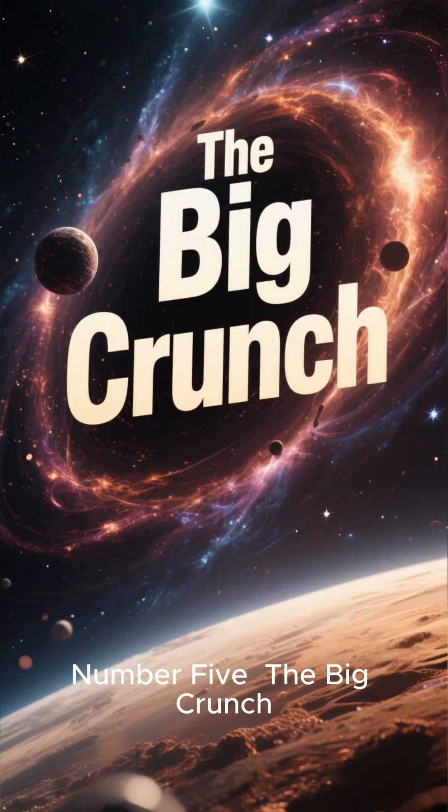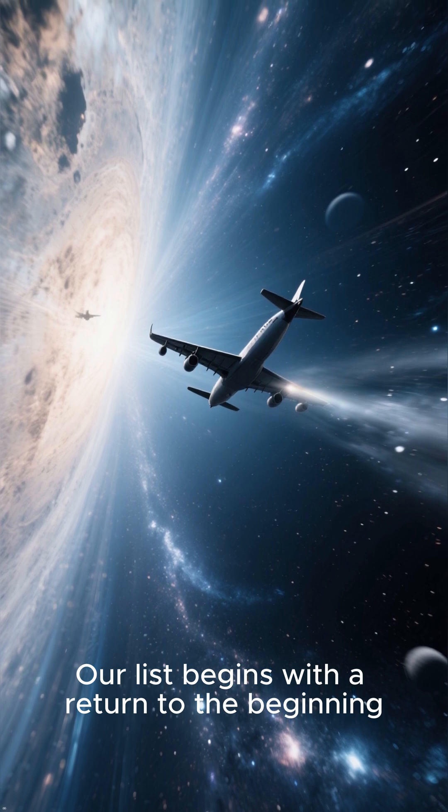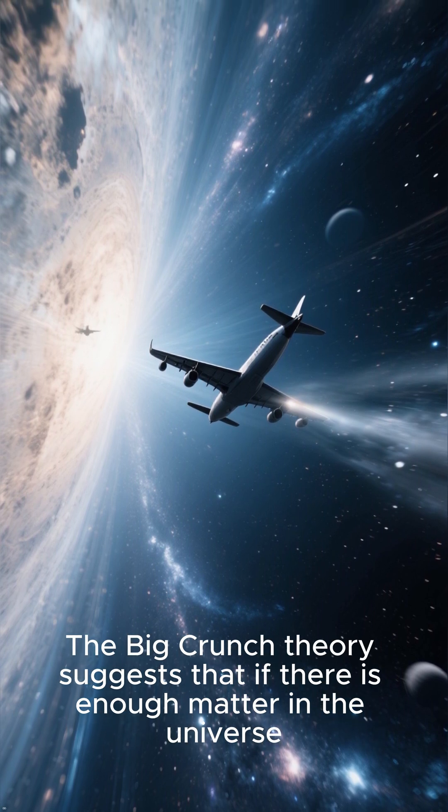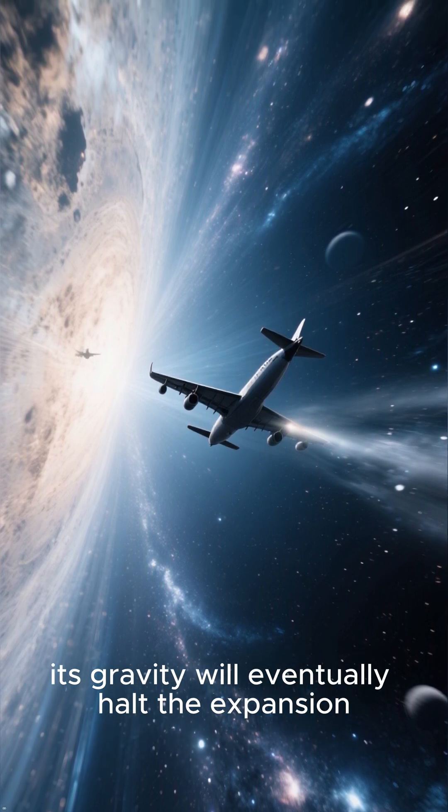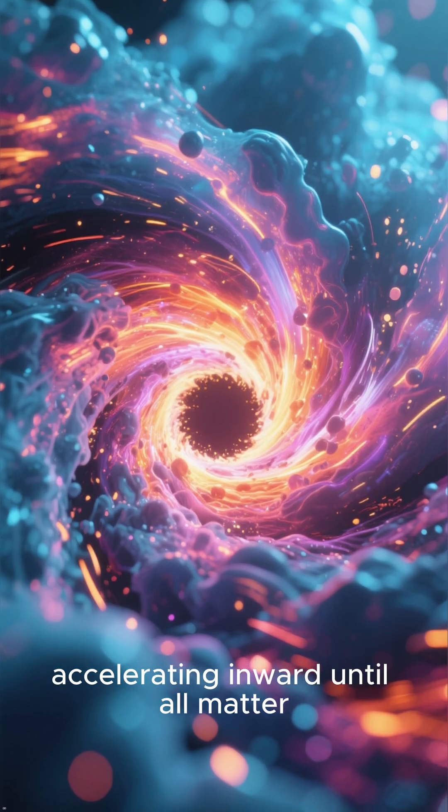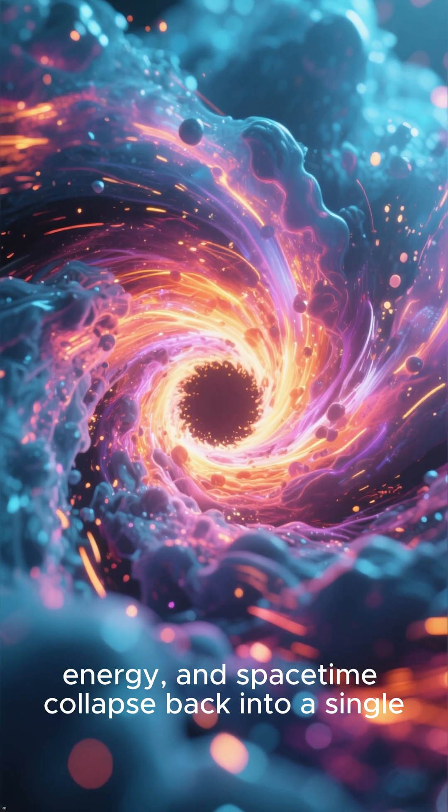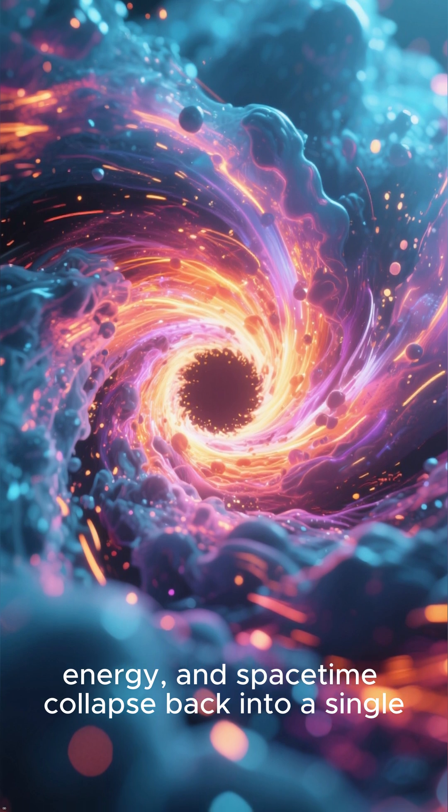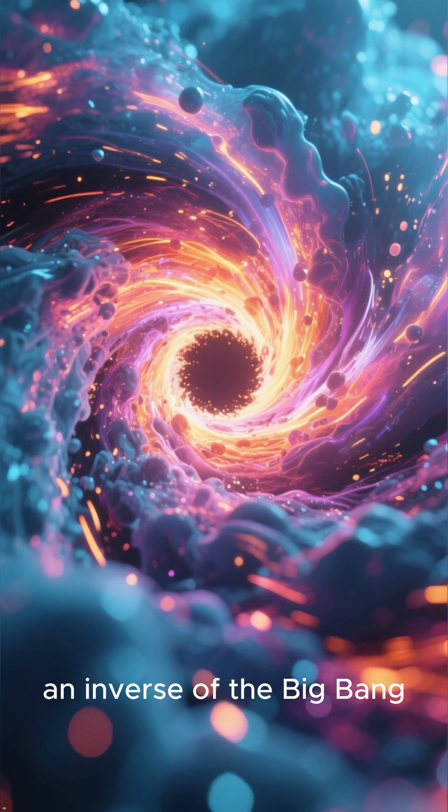Number 5: The Big Crunch. Our list begins with a return to the beginning. The Big Crunch theory suggests that if there is enough matter in the universe, its gravity will eventually halt the expansion. The universe would then begin to contract, accelerating inward until all matter, energy, and space-time collapse back into a single, super-dense singularity, an inverse of the Big Bang.